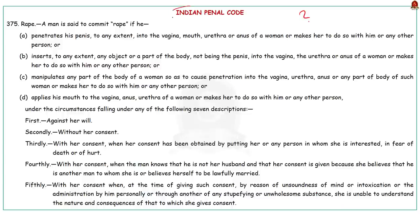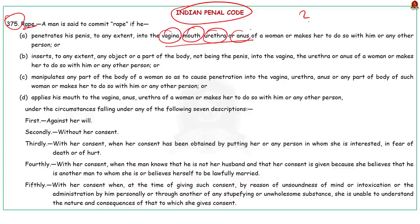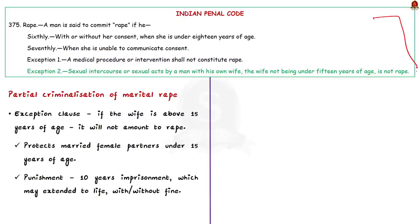Coming back to whether Indian laws address marital rape: the IPC does criminalize rape under Section 375 — both sexual intercourse and other sexual penetration such as oral sex are brought under the definition of rape. However, the issue lies in the exception clause of Section 375, which states that sexual intercourse or sexual acts by a man with his own wife is not rape unless the wife is under the age of 15 years.